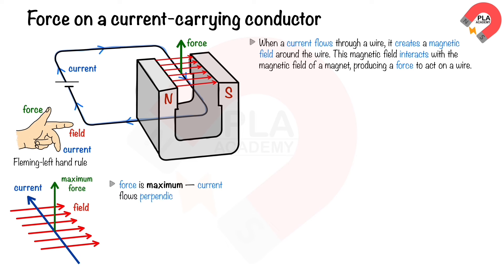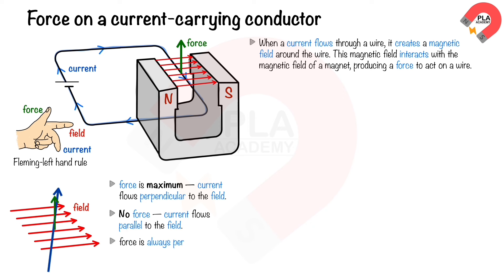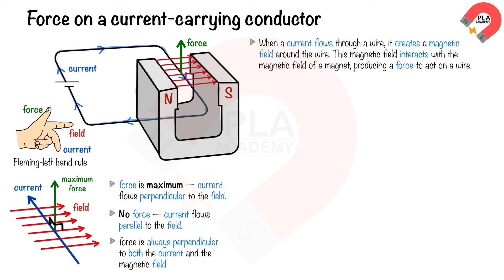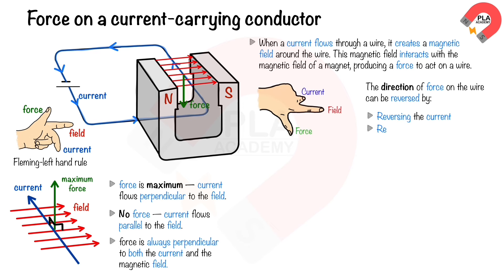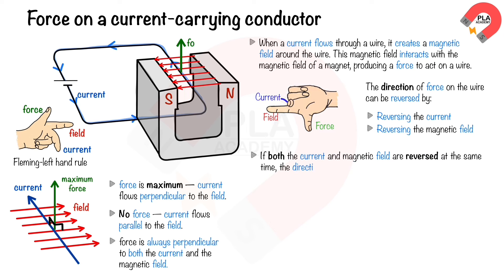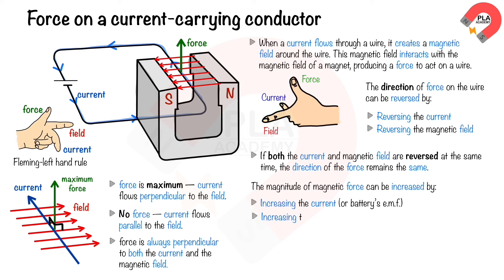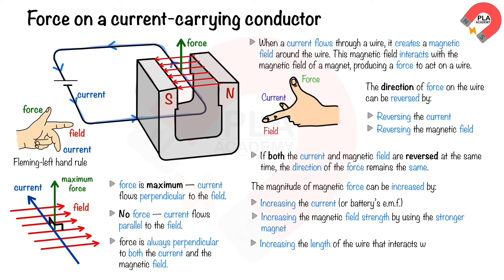The force is maximum when the current flows perpendicular to the magnetic field, decreases when the current flows at an angle, and there is no force when the current flows parallel to the magnetic field. The magnetic force is always perpendicular to both the current and the field. The direction of force can be reversed by reversing the current or reversing the magnetic field. If both are reversed simultaneously, the force direction remains the same. The magnitude of force can be increased by increasing the current, using a stronger magnet, or increasing the length of wire in the field.